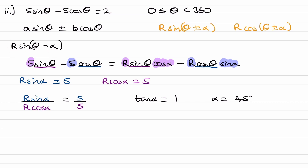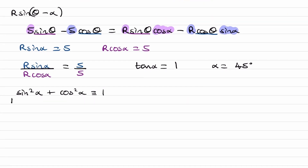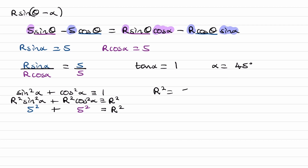Now we need to find R. Using the identity sine squared alpha plus cos squared alpha equals 1, multiply through by R squared: R squared sine squared alpha plus R squared cos squared alpha equals R squared. Substituting our values, that's 5 squared plus 5 squared equals R squared, giving R squared equals 50, so R equals the square root of 50, which is 5 root 2.